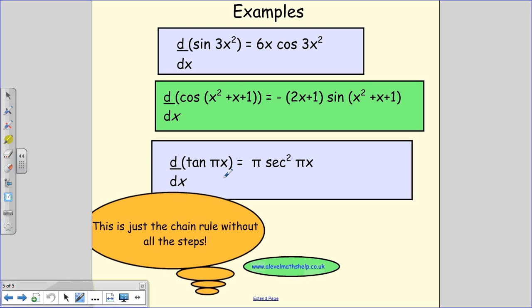Then tan pi x. Now I wanted to include this because often with these sorts of questions, you do get pi included. And it's to do with using radians. And pi is just a number. So if I had 3x and I want to differentiate, I'd get 3. So if I get pi x and I differentiate, I just get pi. So this becomes pi sec squared pi x.